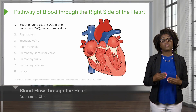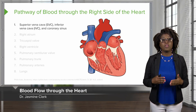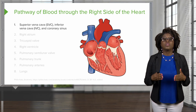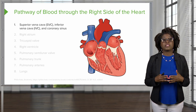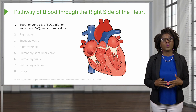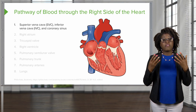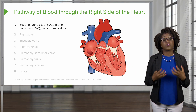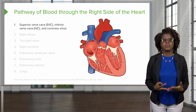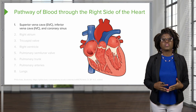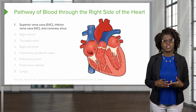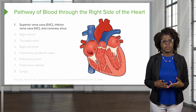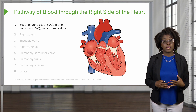Now let's look at the pathway of blood from the right side of the heart. On the right side of the heart, we have three major veins that are going to come into and meet with the right atrium. These are the superior vena cava, the inferior vena cava, and the coronary sinus.